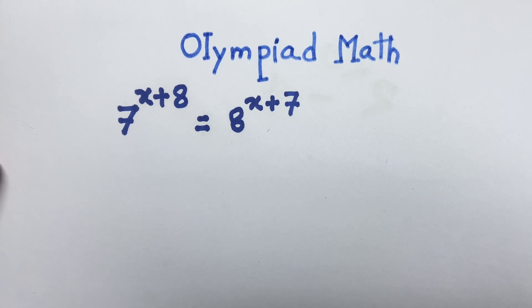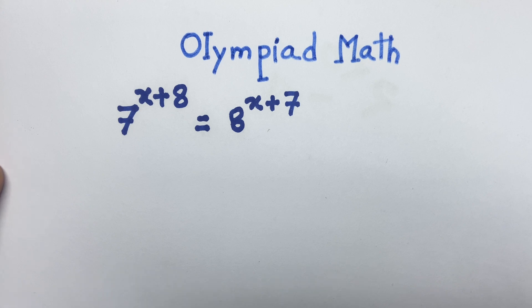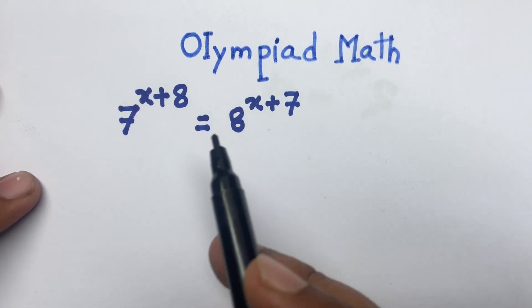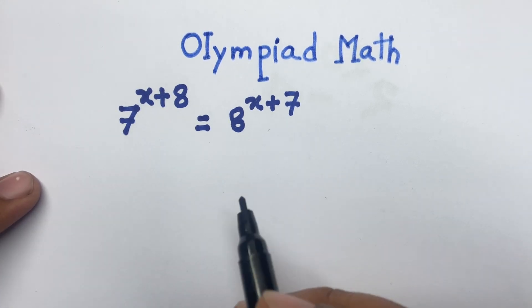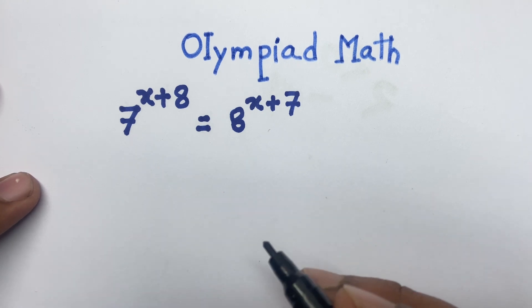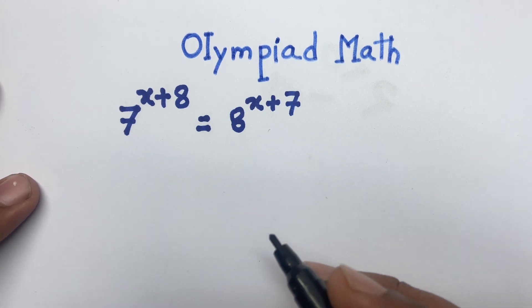Hello everyone. In this video I solve this Olympiad math question. It is an exponential equation. The question is 7 to the power x plus 8 equal to 8 to the power x plus 7. I will find out what is the value of x.